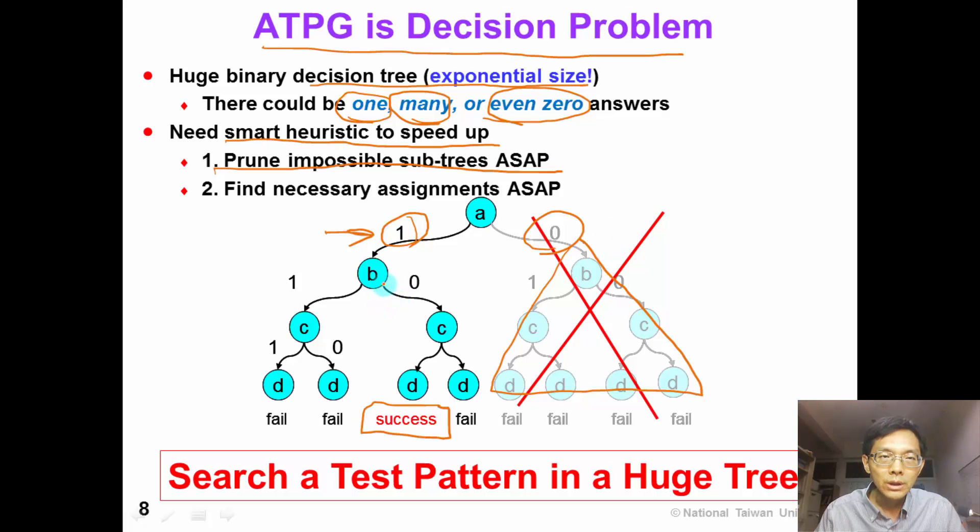On the left subtree, we will need to find necessary assignments as soon as possible. For example, if we can know that B must be 0, C must be 1, then we can search for this solution. So basically, these are two important heuristics in ATPG.